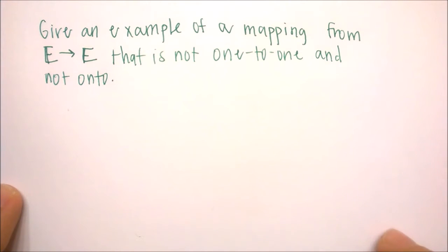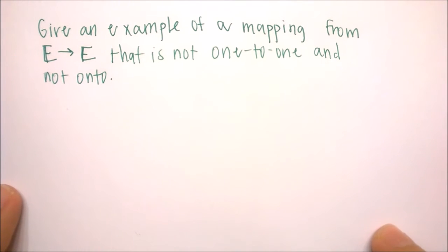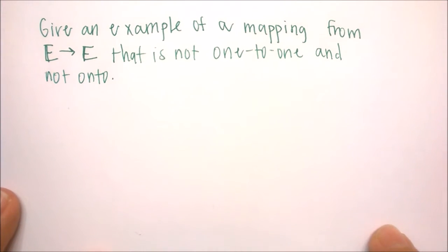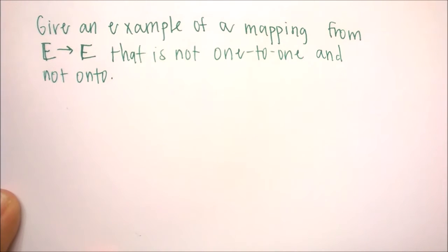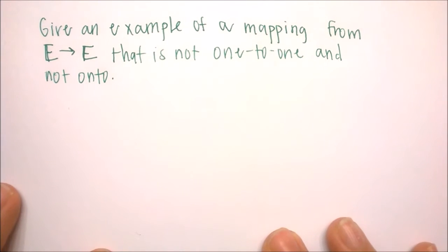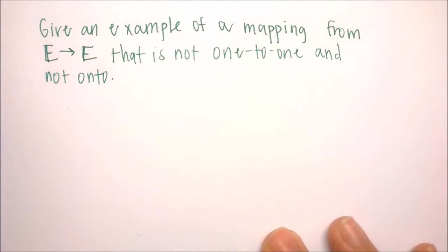We want to give an example of a mapping from the set of even integers to the set of even integers that is not one-to-one and not onto. So real quick, let's remind ourselves what does it mean to be one-to-one and what does it mean to be onto.